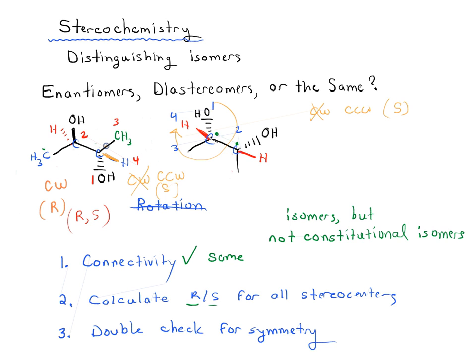And this carbon over here, we'll do the priorities here as well. This will be priority one, priority two, priority three, and priority four. So that should be originally counterclockwise, but hydrogen's in the front as well. So it's actually going to be the opposite direction. It's actually going to be clockwise, which is R.